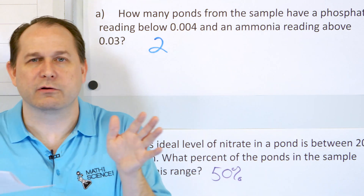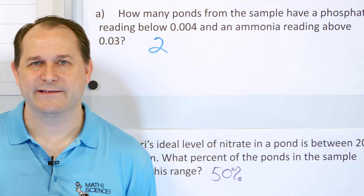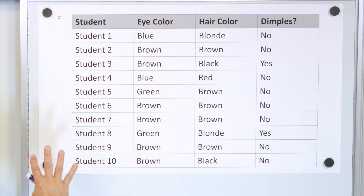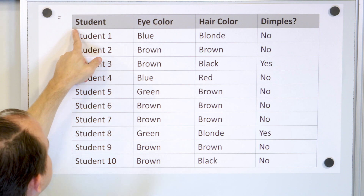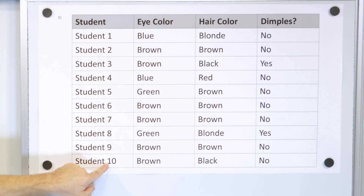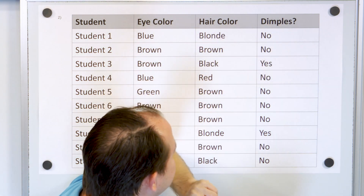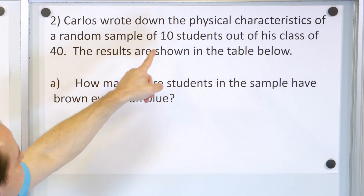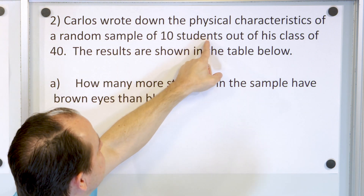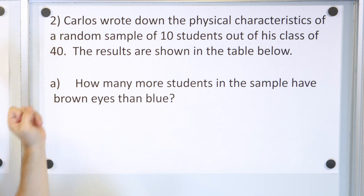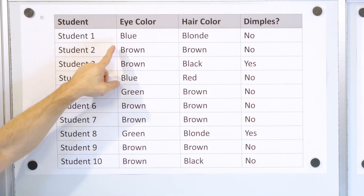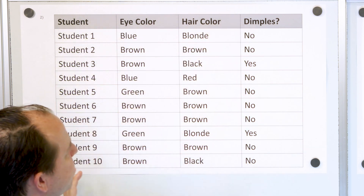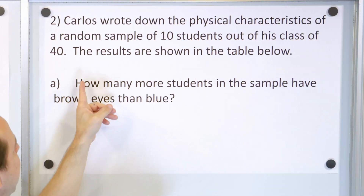It could be a little smaller or bigger, but if our sample is good it should be pretty close. Now for problem two: we have a table of students in a class. We have 10 students sampled, with their eye color, hair color, and whether they have dimples. Carlos wrote down the physical characteristics of a random sample of 10 students out of his class of 40 students.